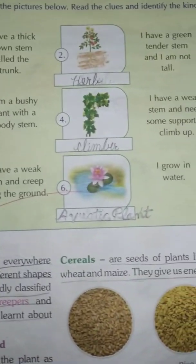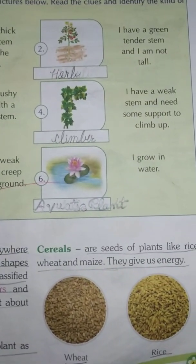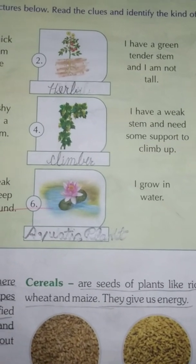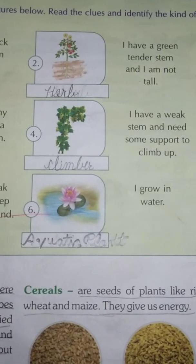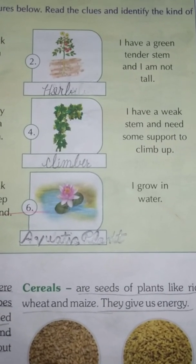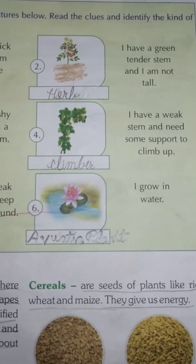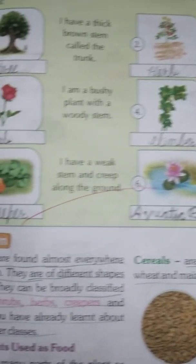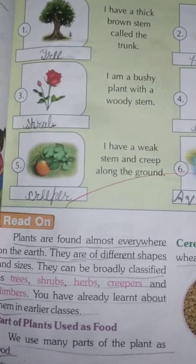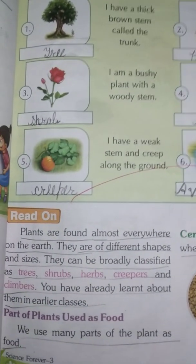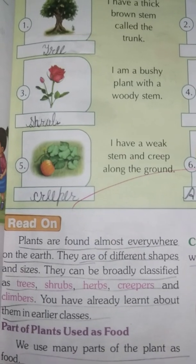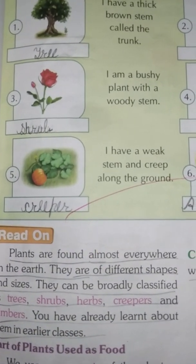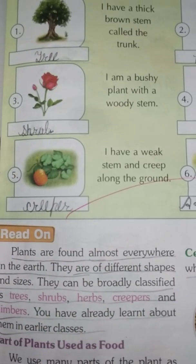Number 2: I have a green, tender stem. Number 3: I am a bushy plant with a woody stem. The answer is: Shrub.